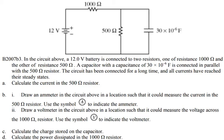The problem says: in the circuit above, a 12-volt battery is connected to two resistors, one of resistance 1000 ohms and the other of resistance 500 ohms. A capacitor with a capacitance of 30 microfarads is connected in parallel with the 500-ohm resistor. The circuit has been connected for a long time and all circuits have reached their steady states. For part A, they ask to calculate the current in the 500-ohm resistor.